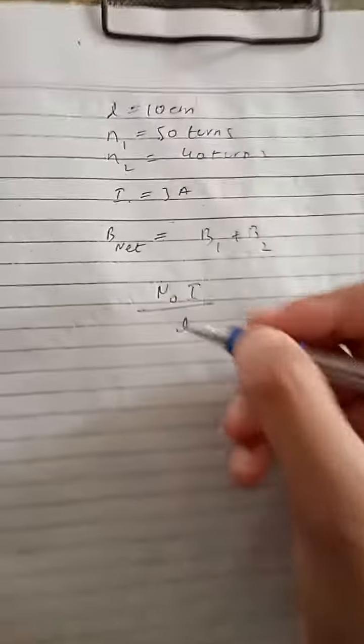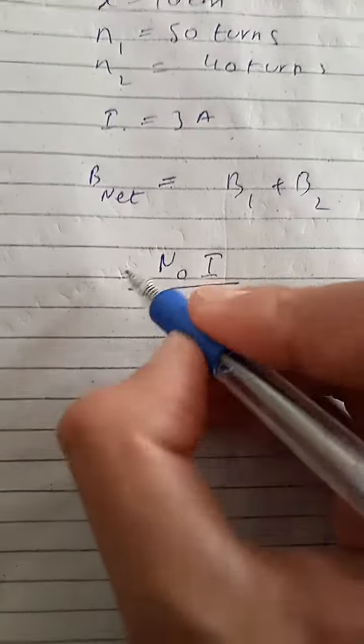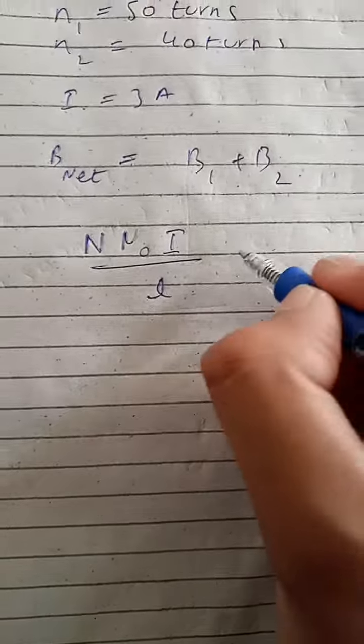B has a μ₀ N I by L. This will be L. You can have this time N also as a function. This means L is 10 cm. So this will be N.